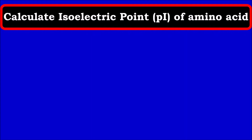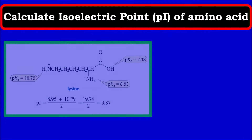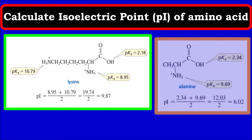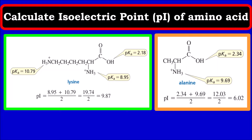Hello everyone, welcome to Chemazon Complete Chemistry. In today's video, we are going to learn about how to calculate the isoelectric point of an amino acid. We will see examples covering acidic, basic, and neutral amino acids and how to calculate the isoelectric point for each.